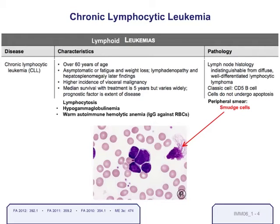There are a couple of associated conditions that are clues to the diagnosis of CLL. One is obviously lymphocytosis — an increase in lymphocyte count. Less obviously, these patients can develop hypogammaglobulinemia, a decrease in immunoglobulins produced by their blood cells, making them more susceptible to infection. Lastly, warm autoimmune hemolytic anemia is associated with CLL. So if you have an older patient presenting with warm autoimmune hemolytic anemia — IgG antibodies against red blood cells — you need to rule out CLL.